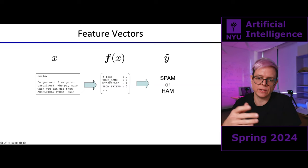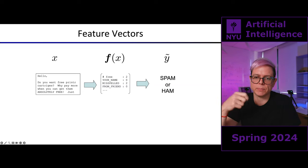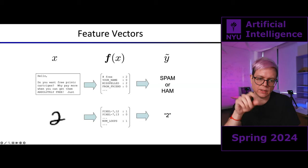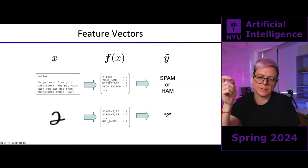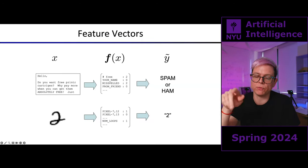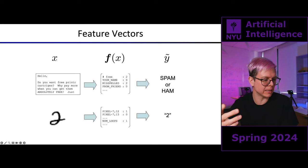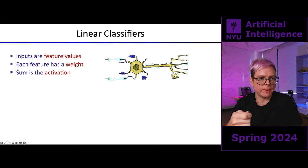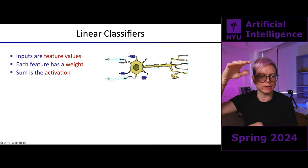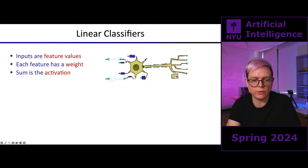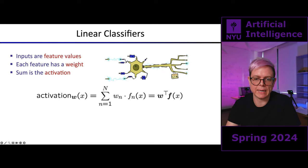We have to engineer some features out of the data point X. Those features are what we feed to the perceptron inputs. The prediction — y-tilde — is either spam or not. Each singular feature has a specific weight. The sum of the multiplication between the features and the weights is called the activation — a weighted sum.